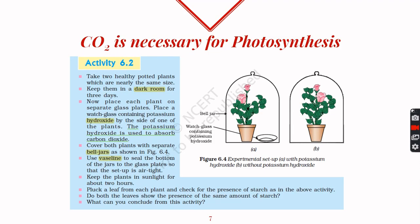Carbon dioxide is an important raw material for photosynthesis, and its necessity can be proven with this activity. We take two potted plants of almost the same height and destarch them. Near one plant we place a plate with potassium hydroxide, which has the property of dissolving carbon dioxide gas. Both plants are then covered with transparent bell jars, and the bottoms are sealed with Vaseline so that outside air cannot enter.